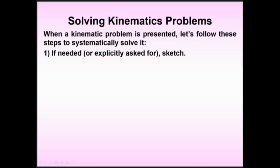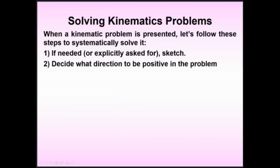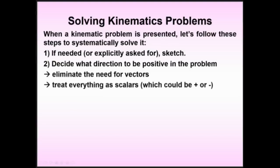Step two: decide which direction you want to be positive. Any direction opposite to that would be negative. This is when we start ditching vectors in favor of scalars — instead of West and East, you use positive and negative. You designate a direction, and whatever comes out gets whatever sign it needs. This eliminates the need for vectors. Step three: treat everything as scalars, which can be positive or negative.